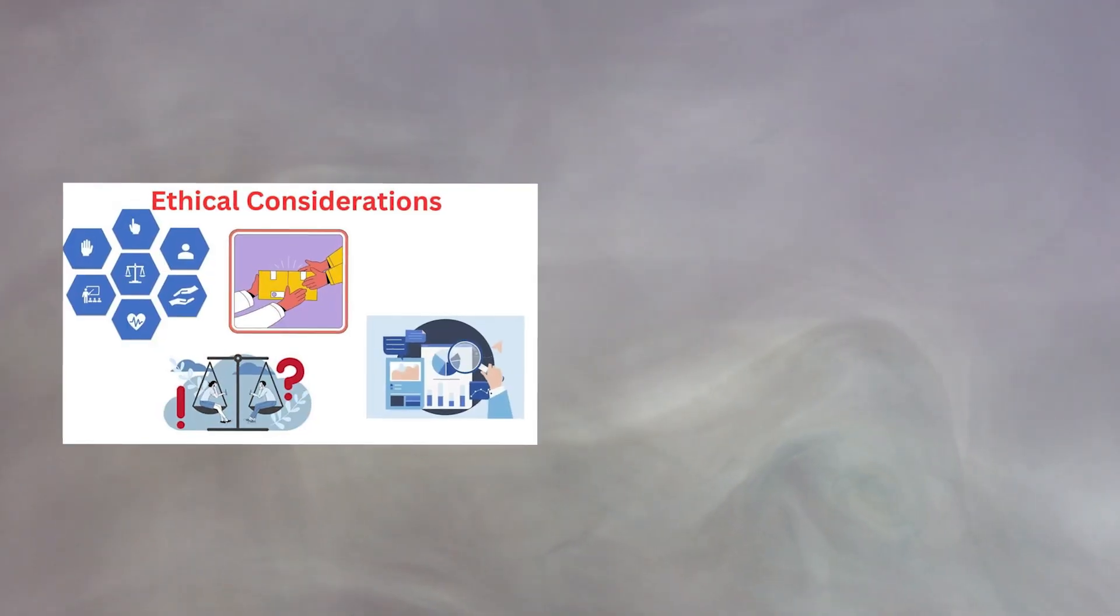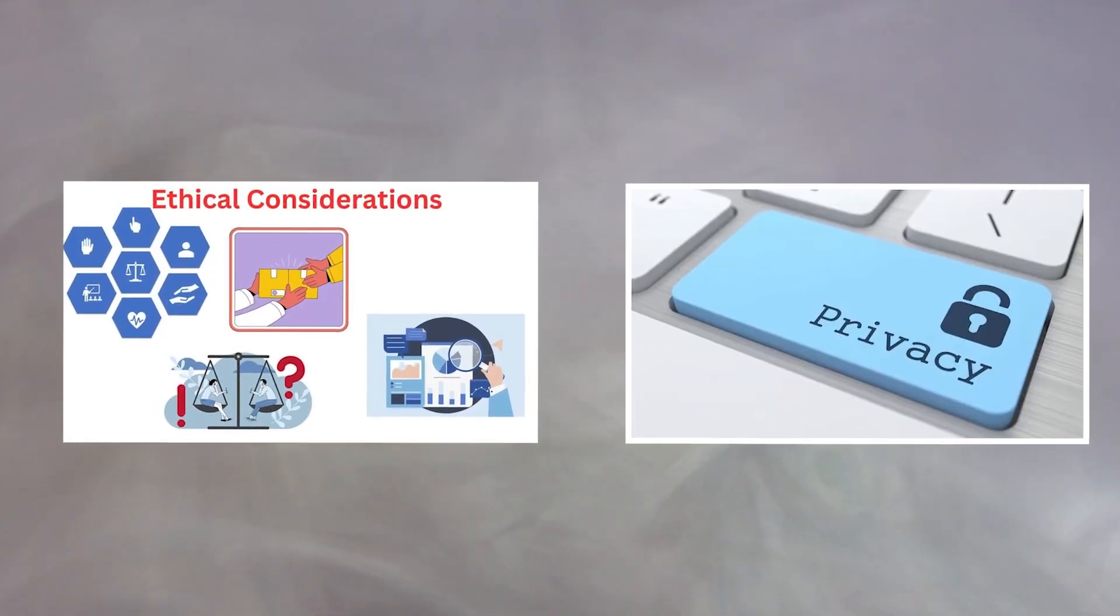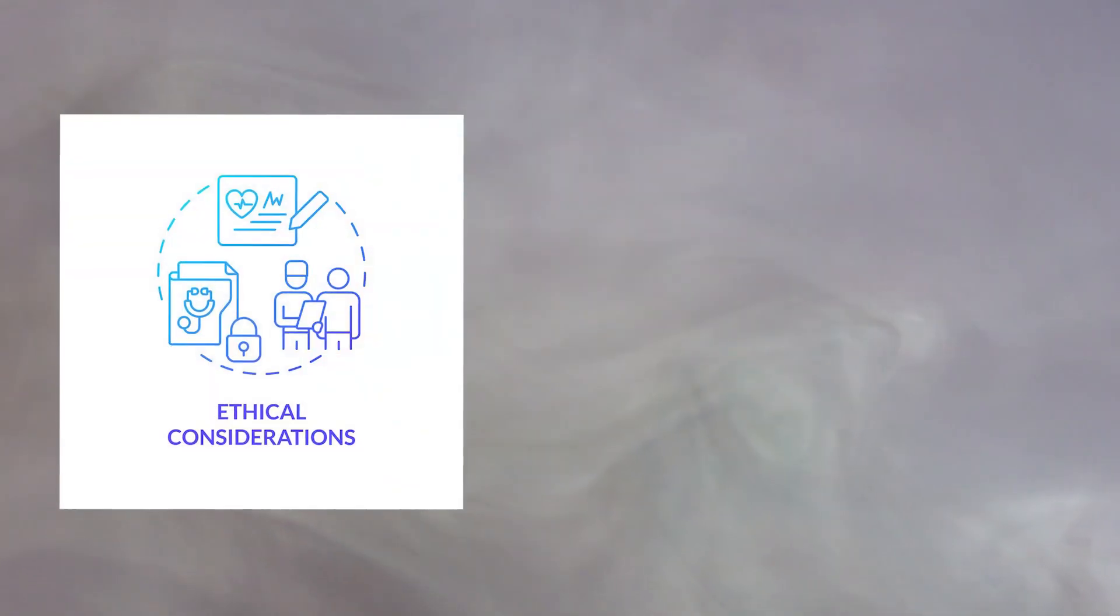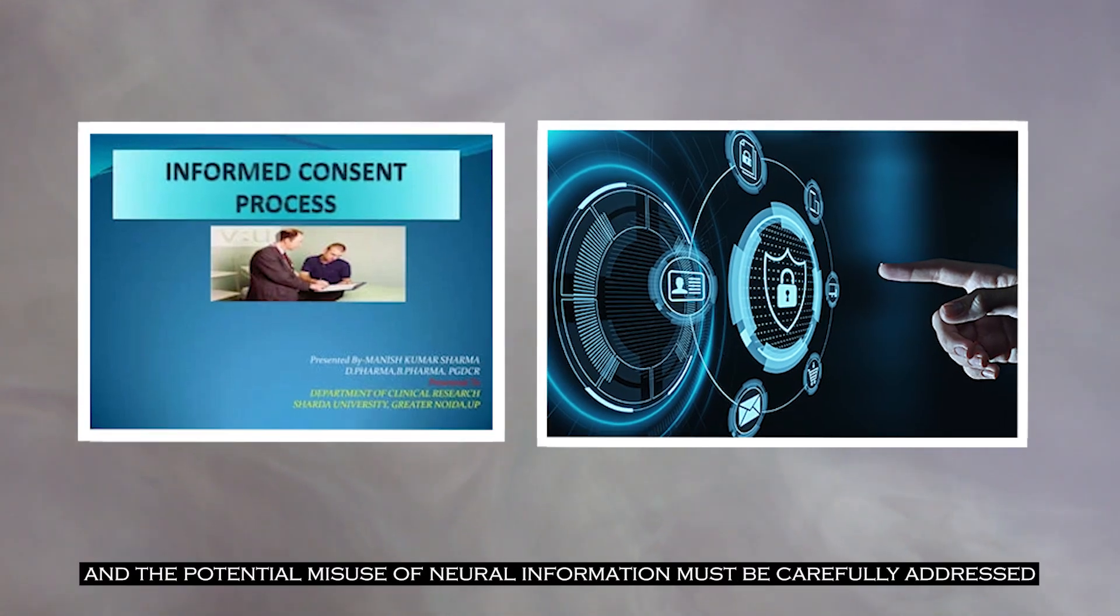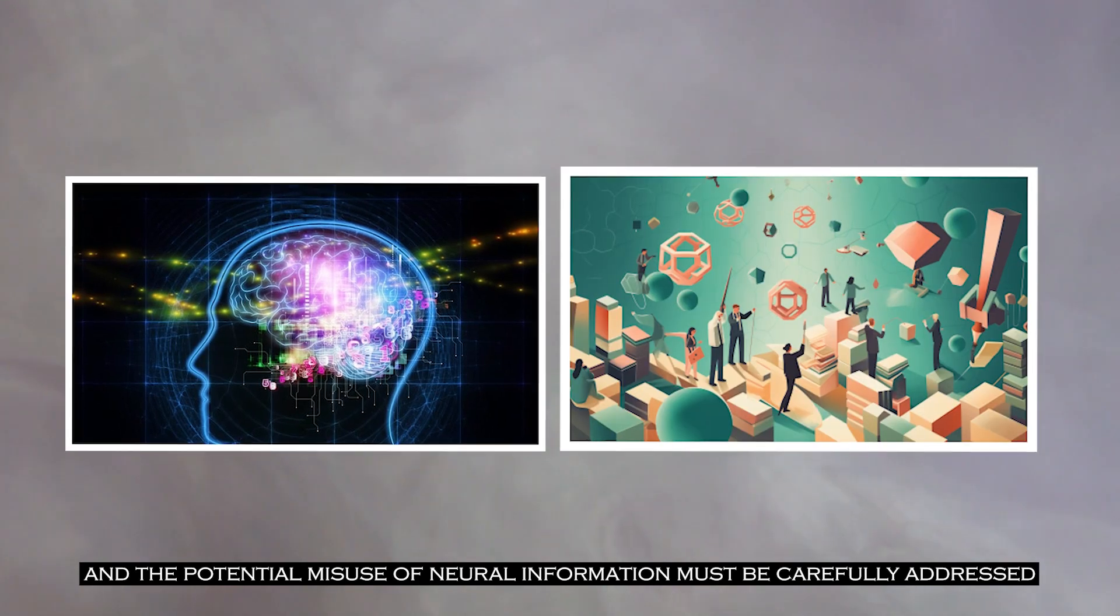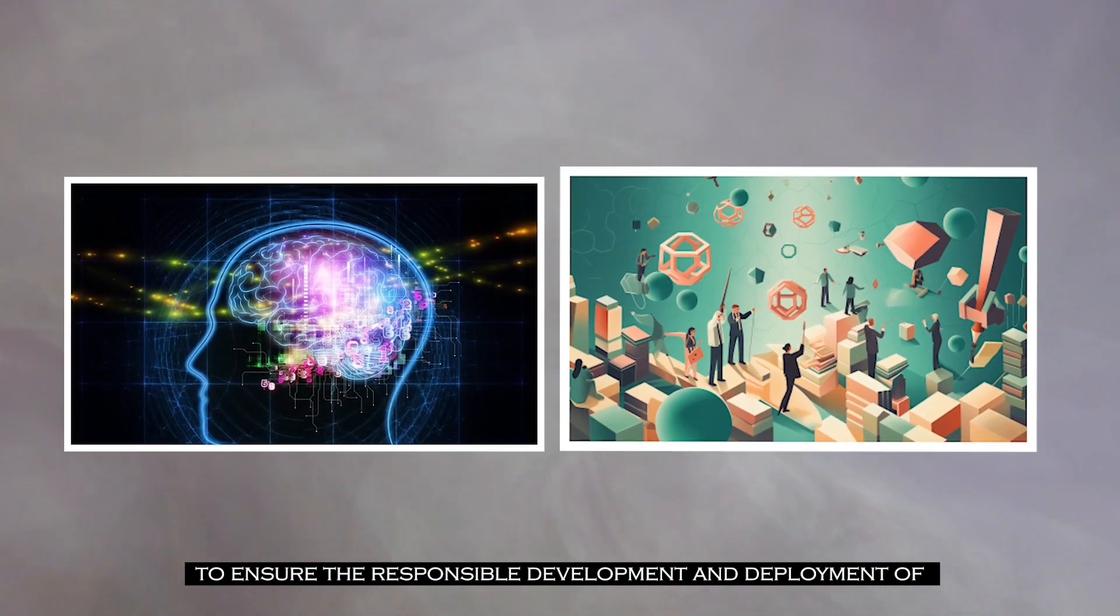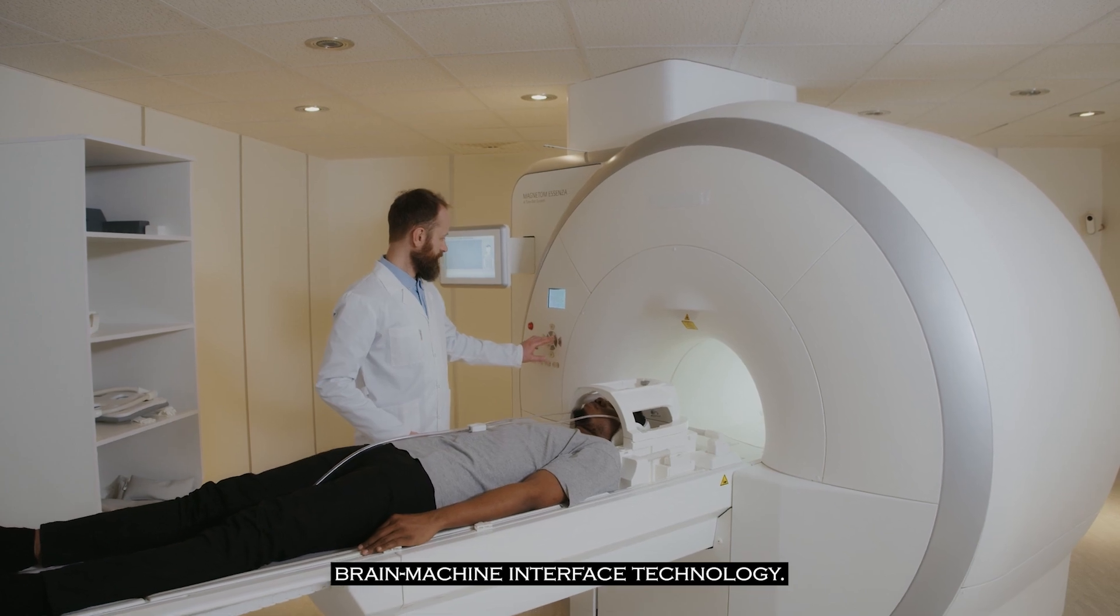Moving on to the next most important question, what about the ethical considerations and privacy concerns? As with any groundbreaking technological advancement, Neuralink's human trials raise ethical considerations and privacy concerns. Issues surrounding consent, data security, and the potential misuse of neural information must be carefully addressed to ensure the responsible development and deployment of brain-machine interface technology.